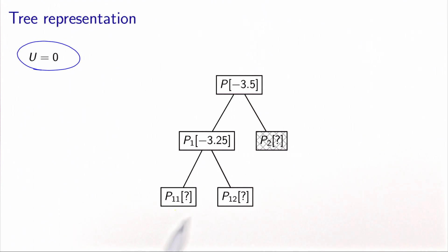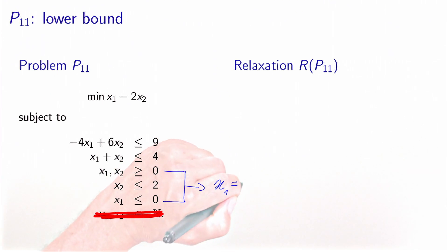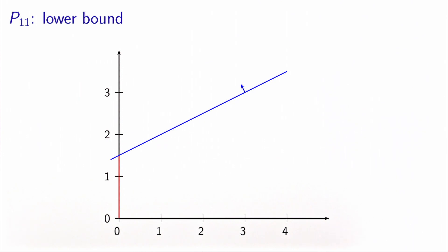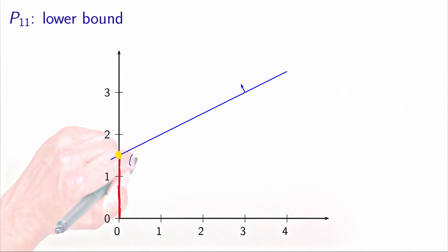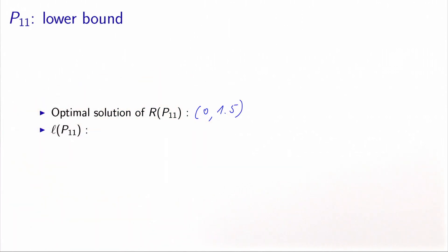We now solve the relaxation of P11. Taking the constraints x1 ≤ 0 and x1 ≥ 0 together means x1 must equal zero, so the polyhedron of the relaxation is a segment with only two vertices. The optimal vertex gives the solution (0, 1.5), which is not yet integer. The lower bound for P11 is the objective value at this point: minus 3.